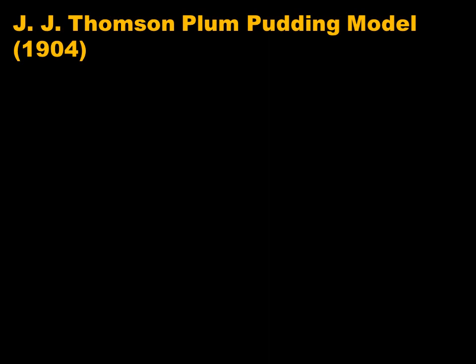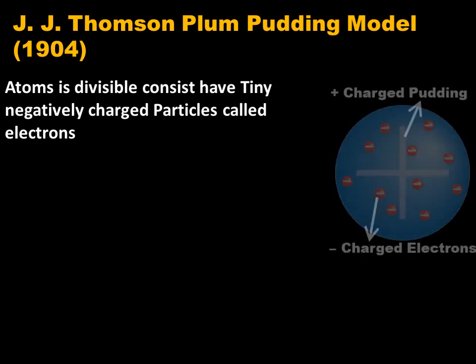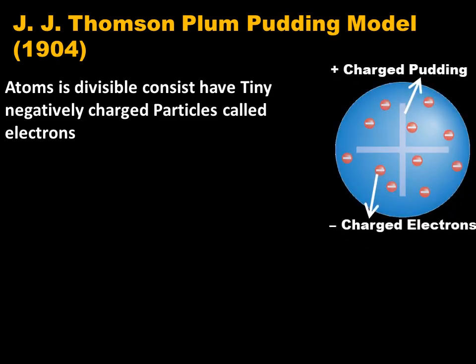J.J. Thomson presented his Plum Pudding model in 1904. He said that the atom is divisible and consists of tiny negatively charged particles called electrons. These negatively charged electrons float within a soup of diffused positive charge.